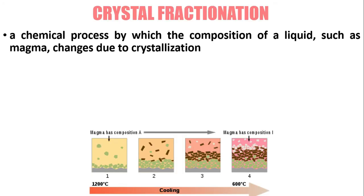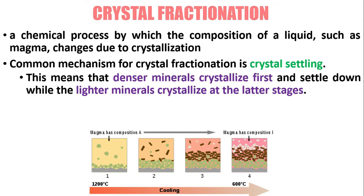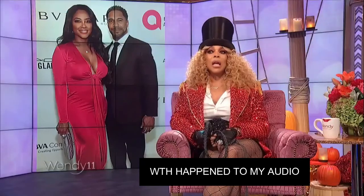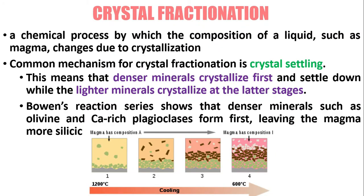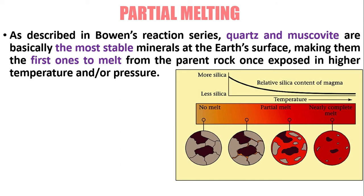First, we have crystal fractionation — a chemical process by which the composition of a liquid changes due to crystallization, i.e., liquid to solid. A common mechanism is crystal settling, where denser materials crystallize first and settle down, while lighter materials crystallize at latter stages. In Bowen's reaction series, denser minerals form first, leaving the magma more silicic. Another is partial melting: as described in the series, quartz and muscovite are the most stable minerals, making them the first to melt from the parent rock. As silica content decreases, more of the magma is melted. Partial melting of ultramafic rock in the mantle produces a basaltic magma; ultramafic rocks are igneous and meta-igneous rocks with very low silica content.